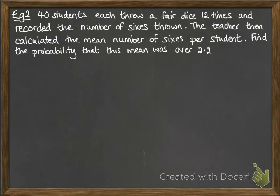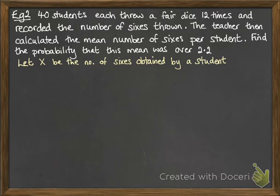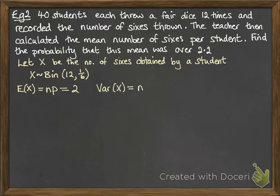Now the next one. We've got 40 students, each throws a fair dice 12 times and records the number of sixes thrown. The teacher then calculates the mean number of sixes per student. We want to work out the probability that this mean was more than 2.2. Let X be the number of sixes thrown by a student, then X follows a binomial distribution with parameters 12 and 1/6. From there we can work out the mean and variance for one student. So one student's 12 throws has mean 2 and variance 5/3.